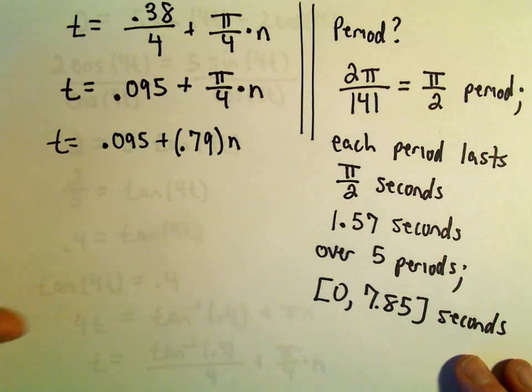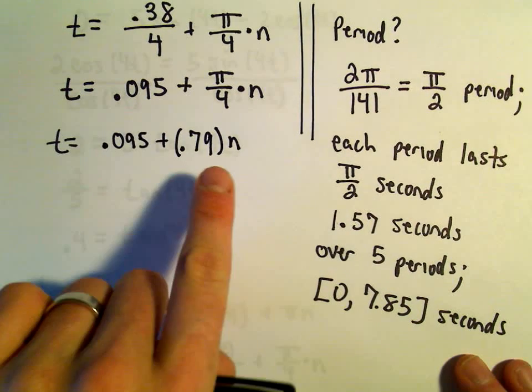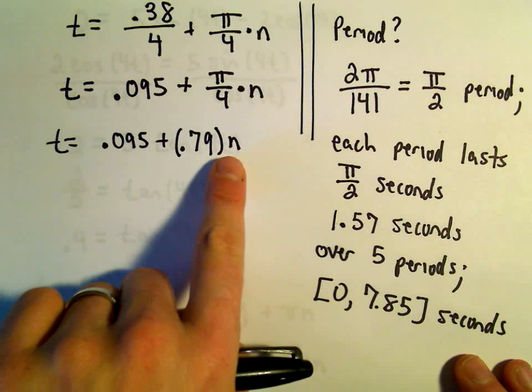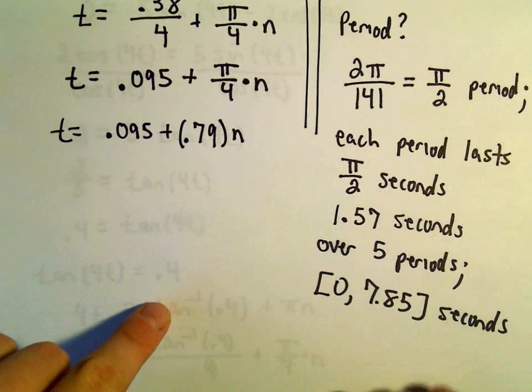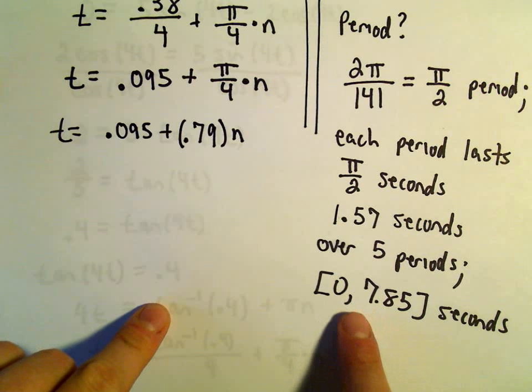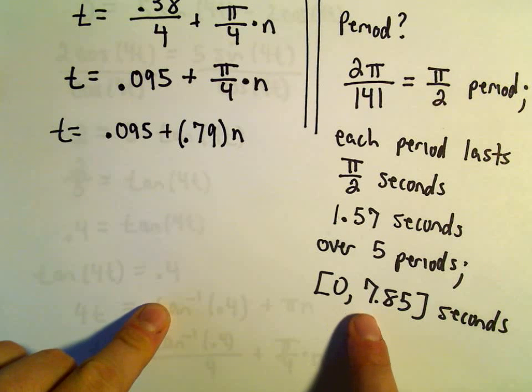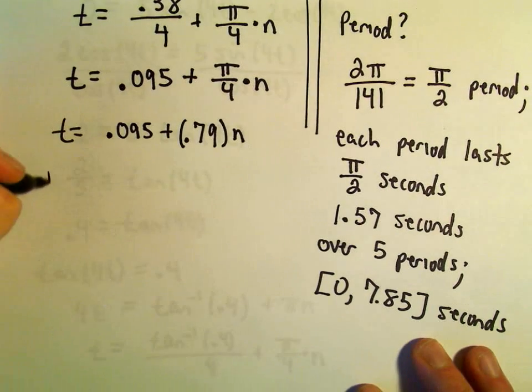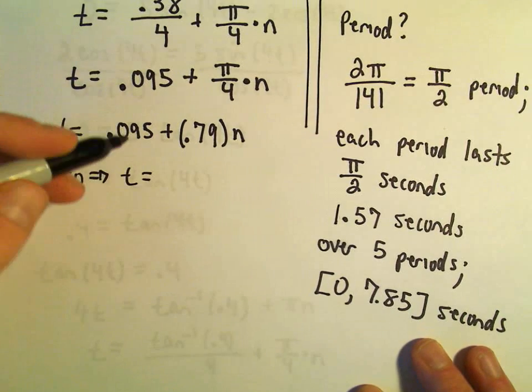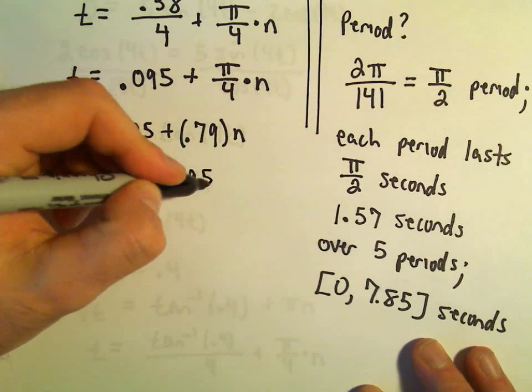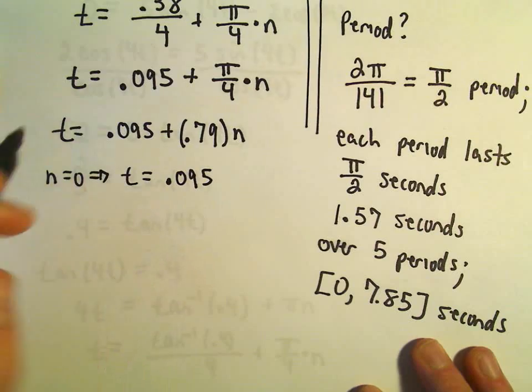Now what we're going to have to do is just start picking values of n: 0, 1, 2, 3, 4, 5, 6, 7, 8, 9, 10. We're going to have to keep doing that and we'll keep getting t values. And we just want t values that fall in this interval from 0 to 7.85 seconds. So notice if n equals 0, we'll simply get t equals 0.095, and that would be one of our solutions.